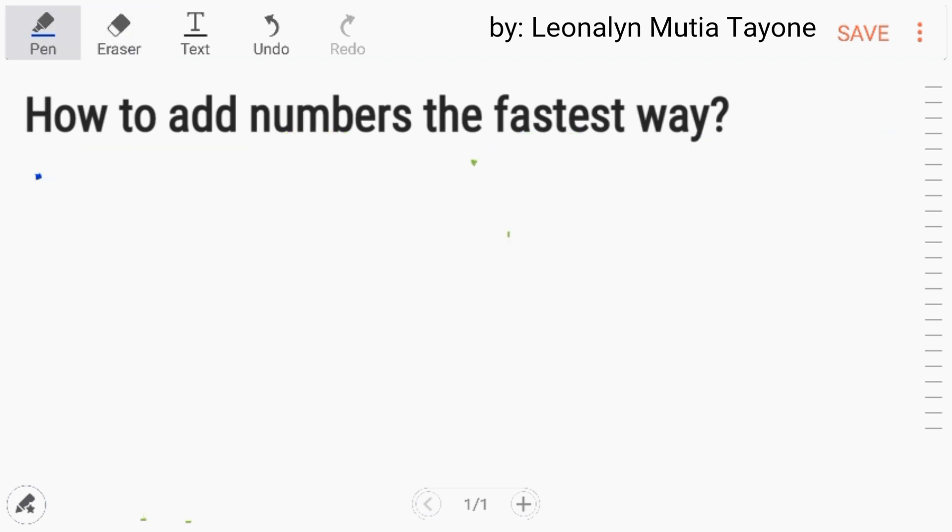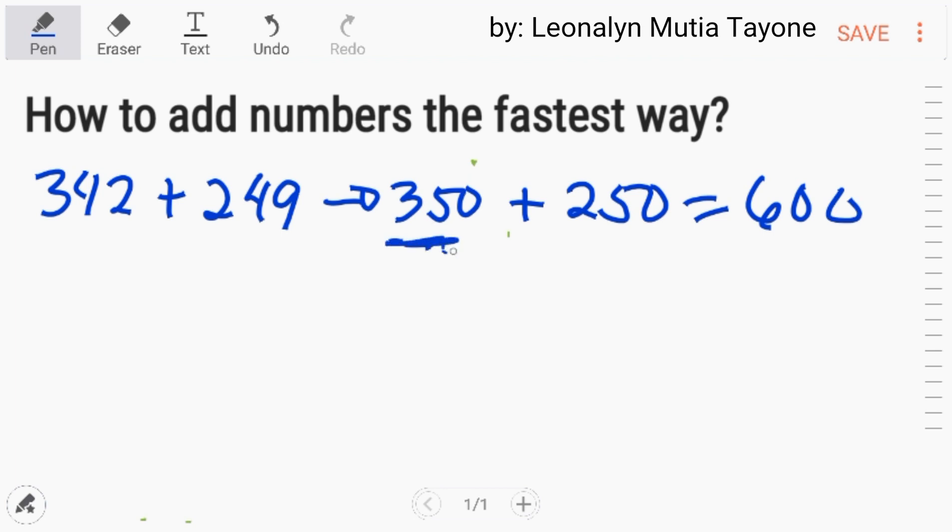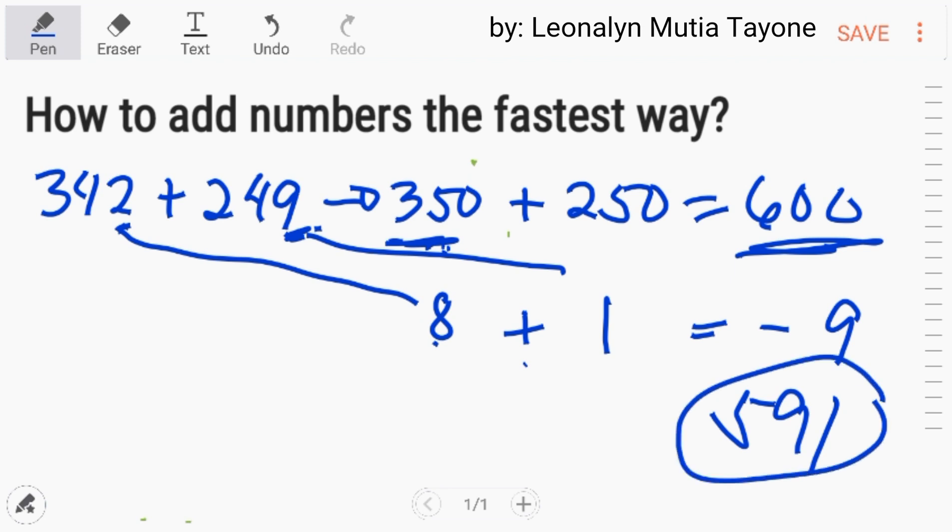Now, let's do another example. 342 plus 249. I-round up natin sila lahat. Ito magiging 350. Ito magiging 250. Sa mind mo lang. Pag ina-add mo ito, mas madali na siya. And this is 600. Paano naging 350? Itong 2, ang kaparis niya ay 8. Plus, itong 9, ang kaparis niya ay 1. Subali, nag-add ka ng 1. 8 plus 1 equals 9. I-deduct mo lang yung 9 sa 600. Kung ang 600 kuhanan mo ng 9, that is 591. Ganun lang, ganun lang kabilis.